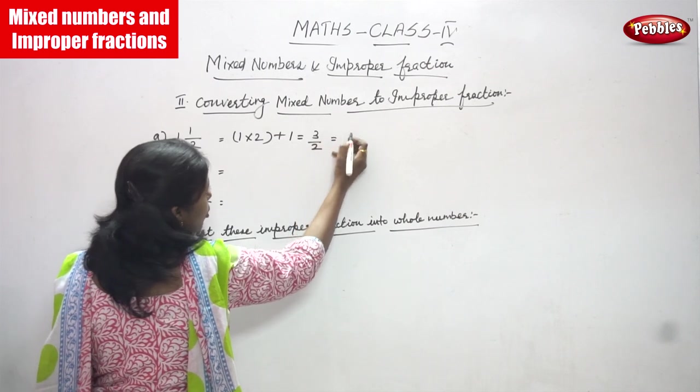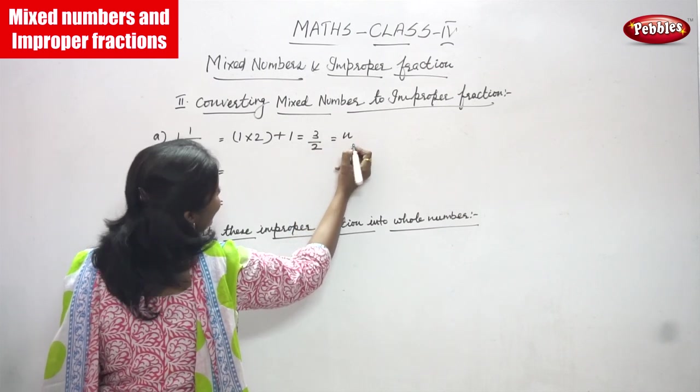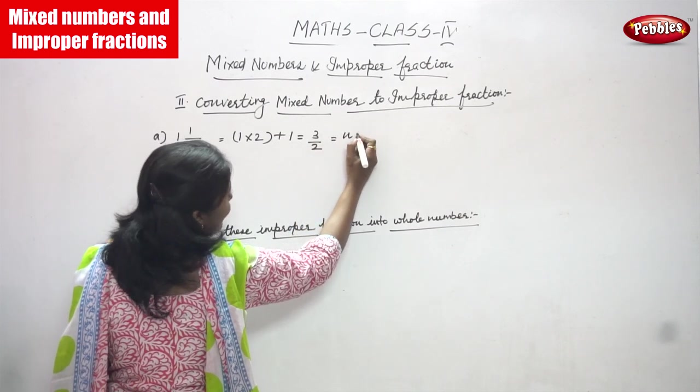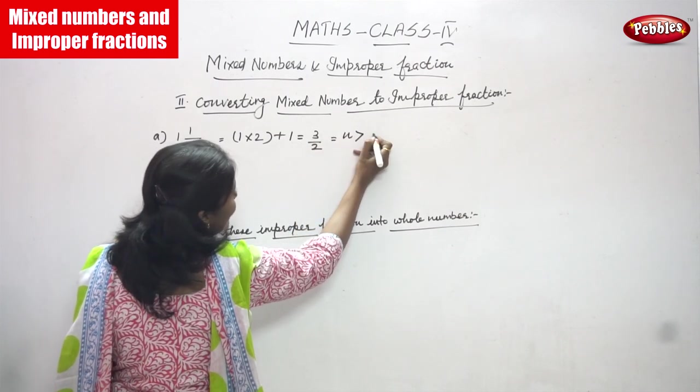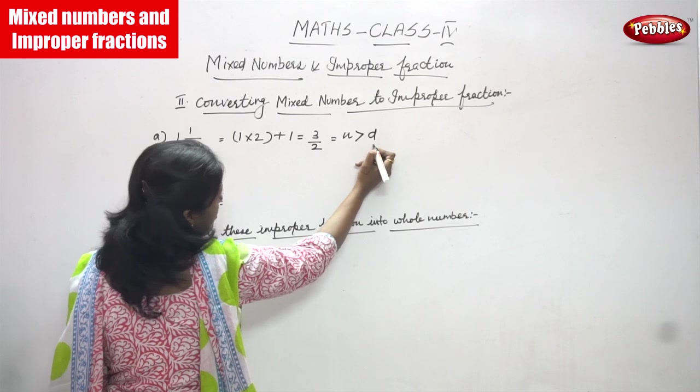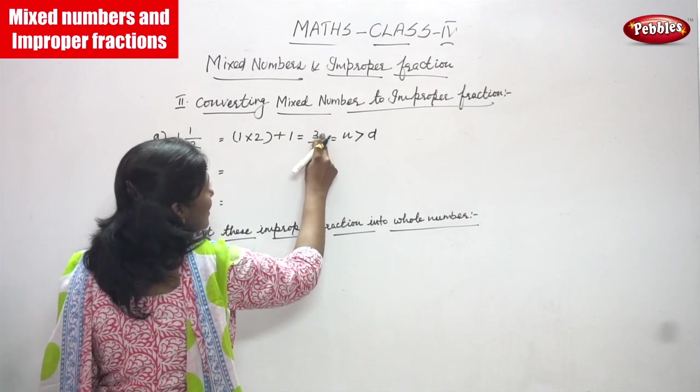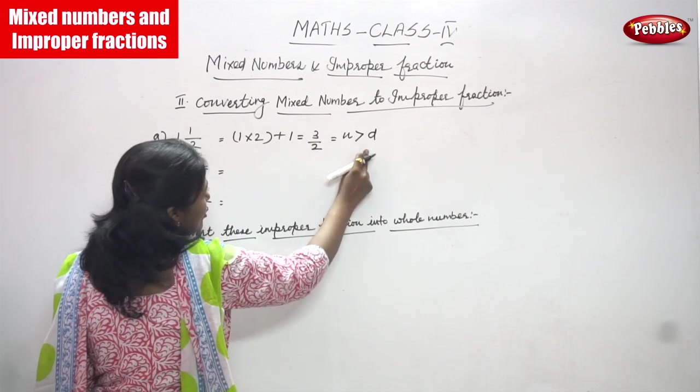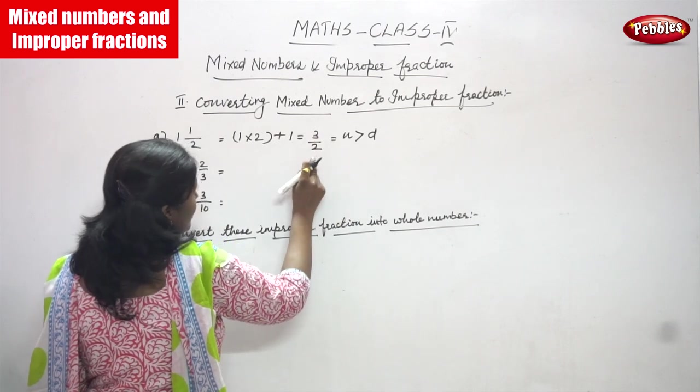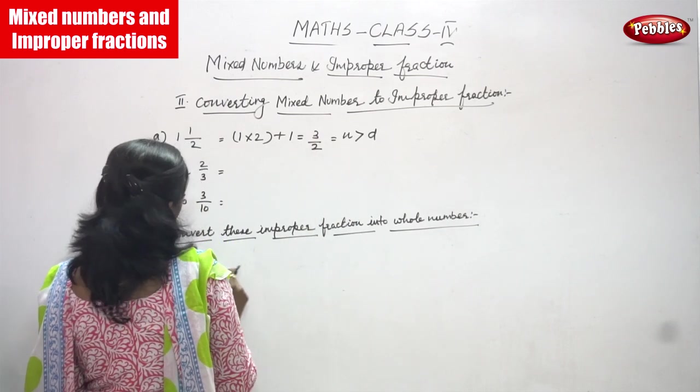So 3 is the numerator and 2 is the denominator. The numerator is greater than the denominator, and that is what makes it an improper fraction.